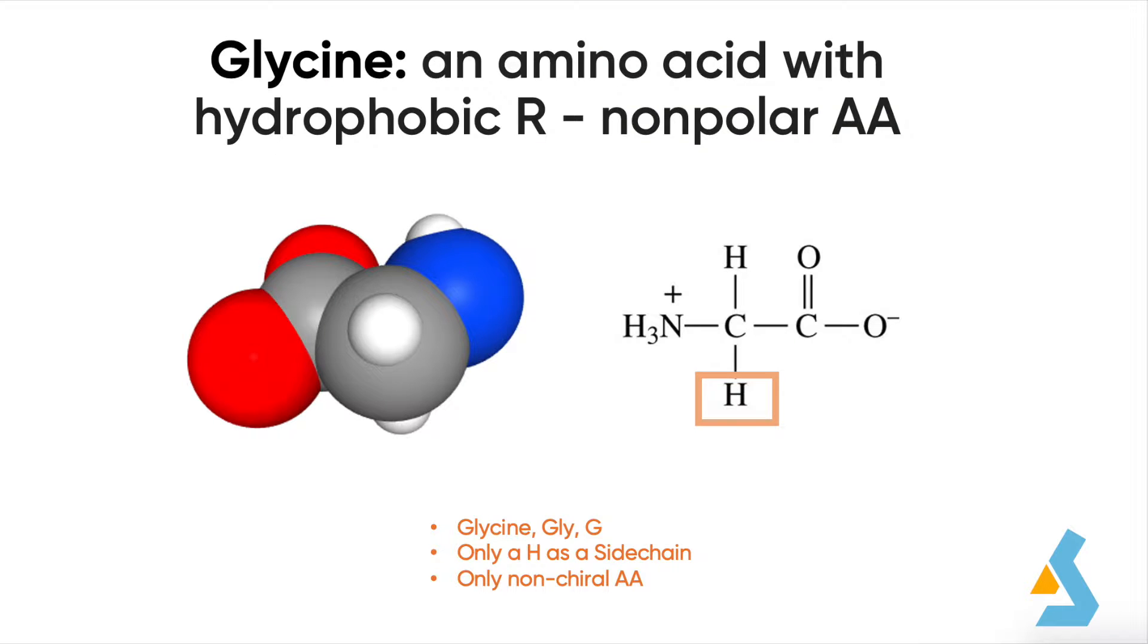Glycine is an amino acid that has a single hydrogen atom as its side chain. As it does not have any elaborate side chain, it is considered the simplest amino acid. Glycine is the only amino acid with no asymmetric, or in other words, a chiral carbon, because it has two hydrogens attached to an alpha carbon.